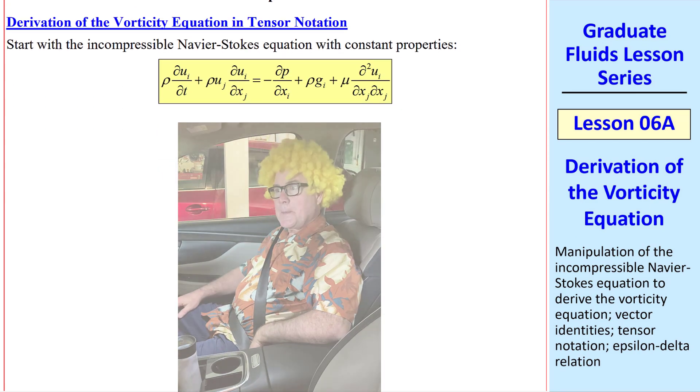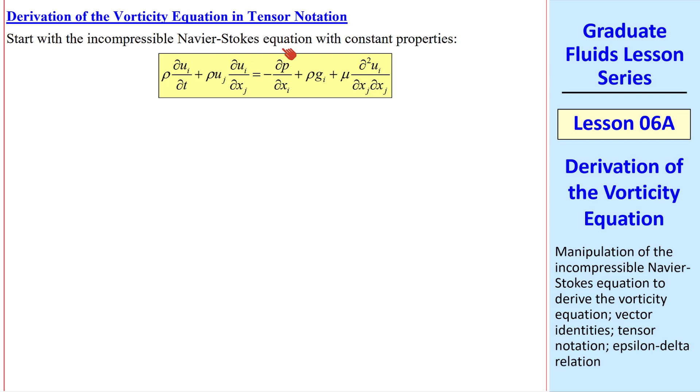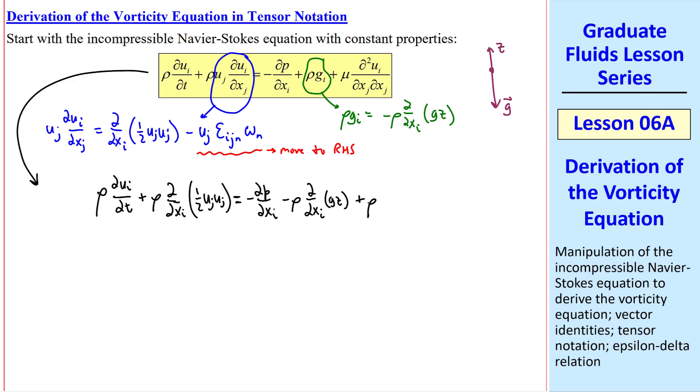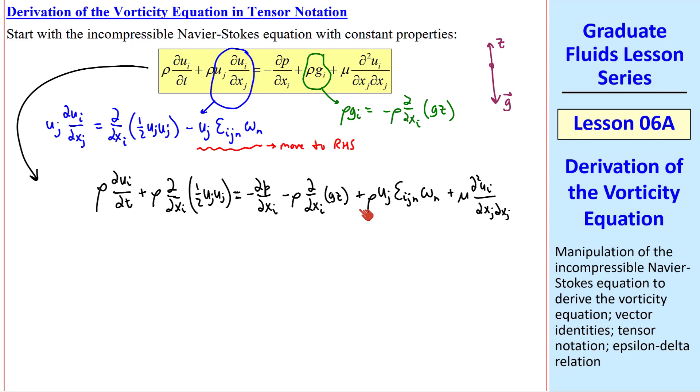Let's start with the Navier-Stokes equation. We'll deal only with incompressible flow with constant properties. Let's apply a vector identity to this term. Namely, we can write it as del-del xi of 1 half uj uj minus uj epsilon ijn omega n. We'll put this term on the right-hand side of the equation. Let's also do something we did with this term before. Namely, let rho g i equal negative rho del-del xi of g z. That's true when g is down, opposite to the direction of z.